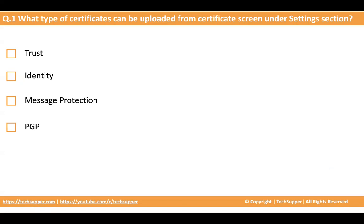Let's see the correct answers. The correct answers are Trust, Identity, and Message Protection. These are the three types of certificates that you can upload under the certificate screen from the settings option.